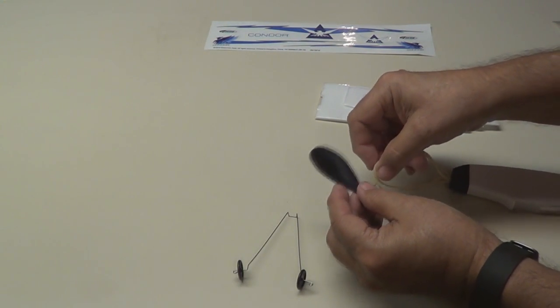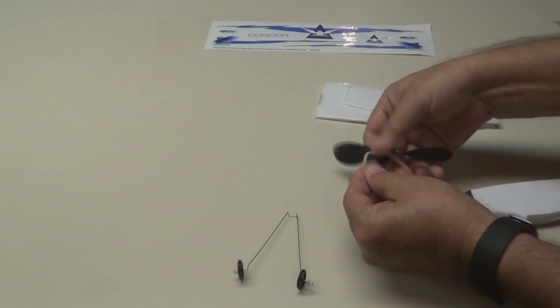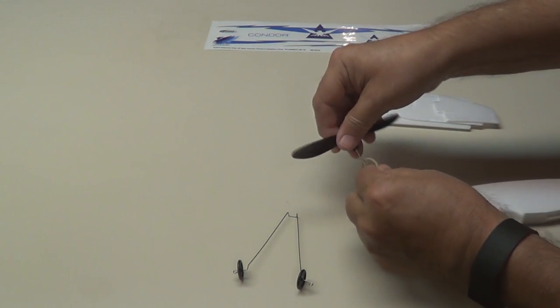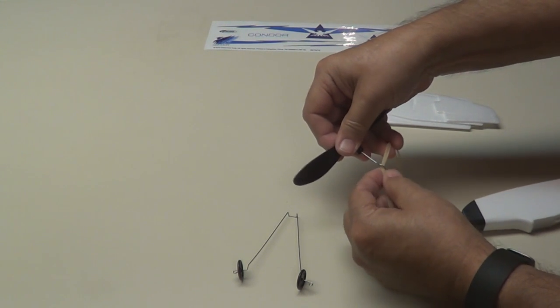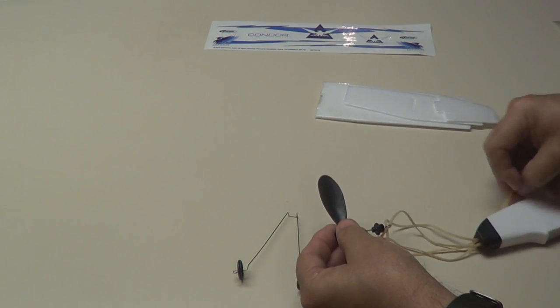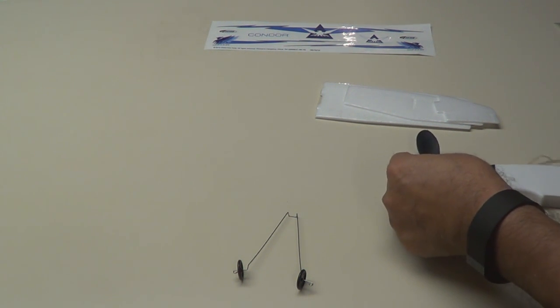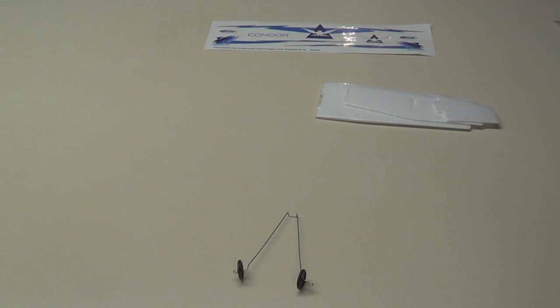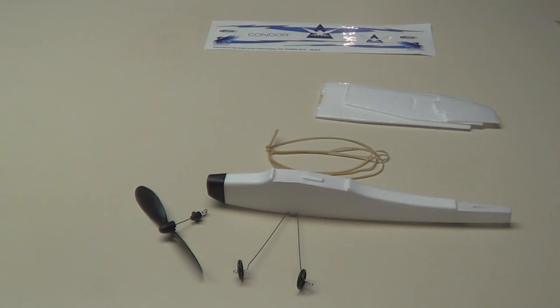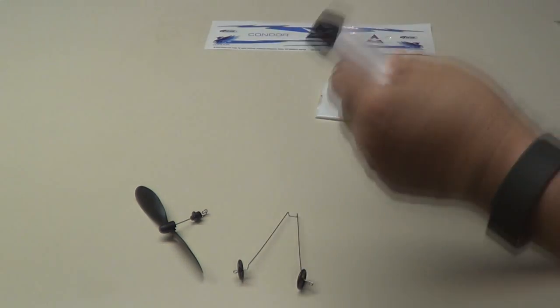Okay, we've got to pull through this, hook it to the end of the propeller here. Pull it on through. It's the length of a rubber band. Let's put three loops in it.